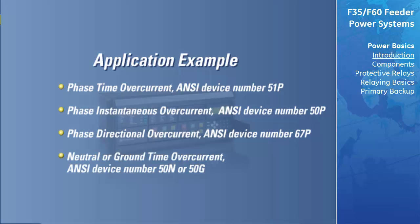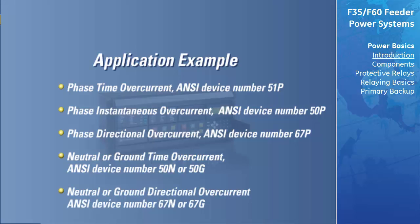Neutral or ground time overcurrent, ANSI device number 50N or 50G; and neutral or ground directional overcurrent, ANSI device number 67N or 67G. Due to the F-60's support of directional elements, we will use the F-60 menus when entering all calculated settings.